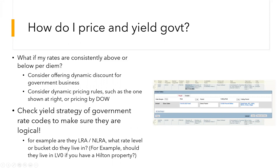Another thing you should consider is checking your yield strategy for your government rate codes and rate plans to make sure they're logical. Are they LRA? Are they non-LRA? What level or bucket do they live in? For example, if you have a Hilton property, does it make sense that your government rates live in LV zero?